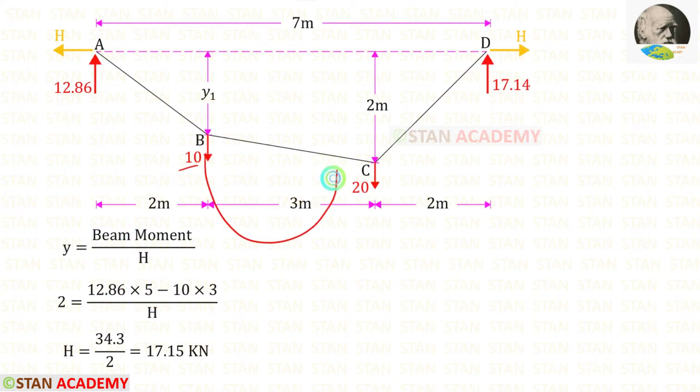This load is acting in the anticlockwise direction so it will be negative and the distance is 3. At point C, Y is 2. Finally for H we will get 17.15 kN.